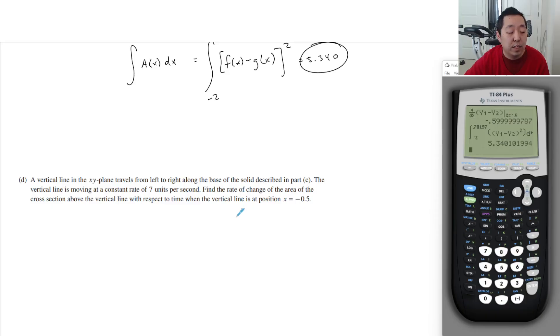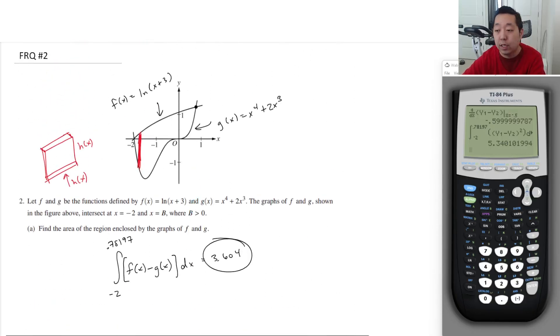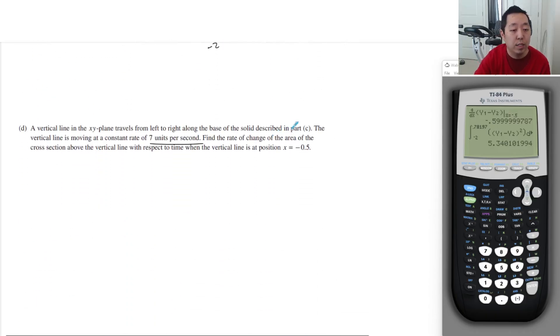A vertical line in the xy plane travels from left to right along the base of the solid described in part c. The vertical line is moving at a constant rate of seven units per second. Find the rate of change of the area of the cross section above the vertical line with respect to time when the vertical line is at x equals negative 0.5. It's kind of weird explained, but they're saying you have a vertical line traveling at a certain rate. They're asking what is the rate of change of the area of the cross section. So the area of the cross section A is just equal to f of x minus g of x squared. They're telling you that dx/dt, the rate of change of x, is seven. And you're asked to find dA/dt. So I have an equation that relates A and x, so I'm going to take the derivative of this.